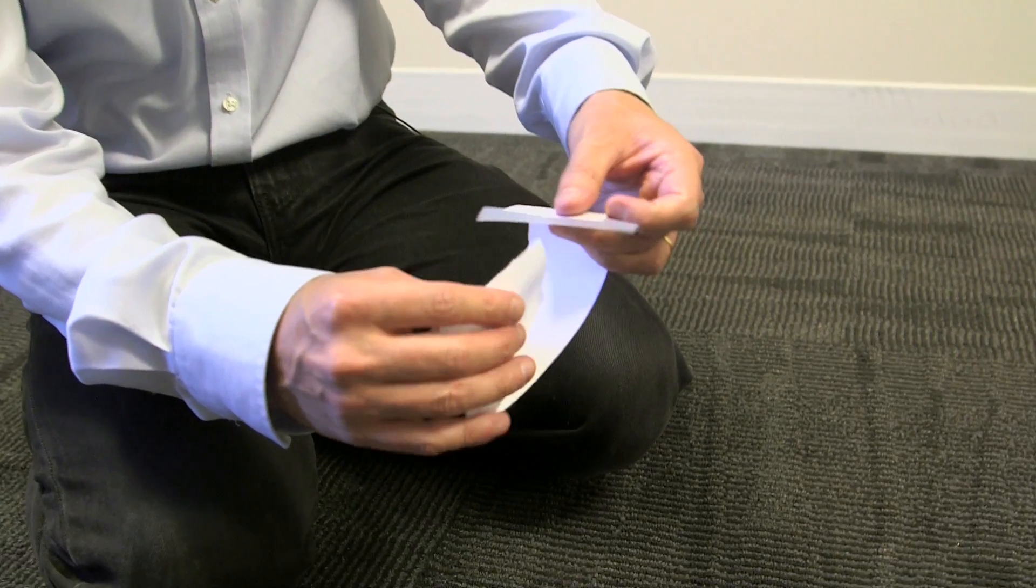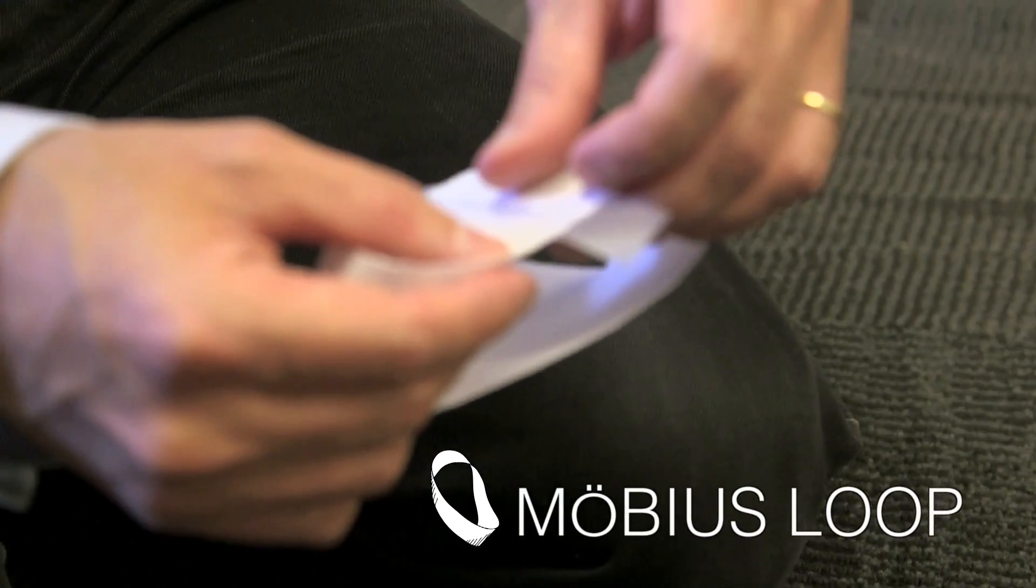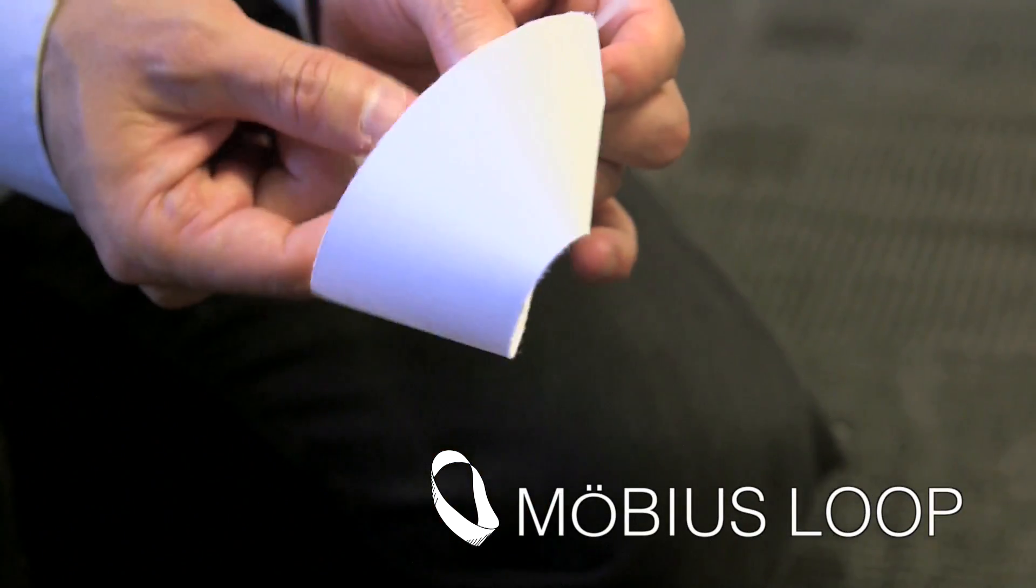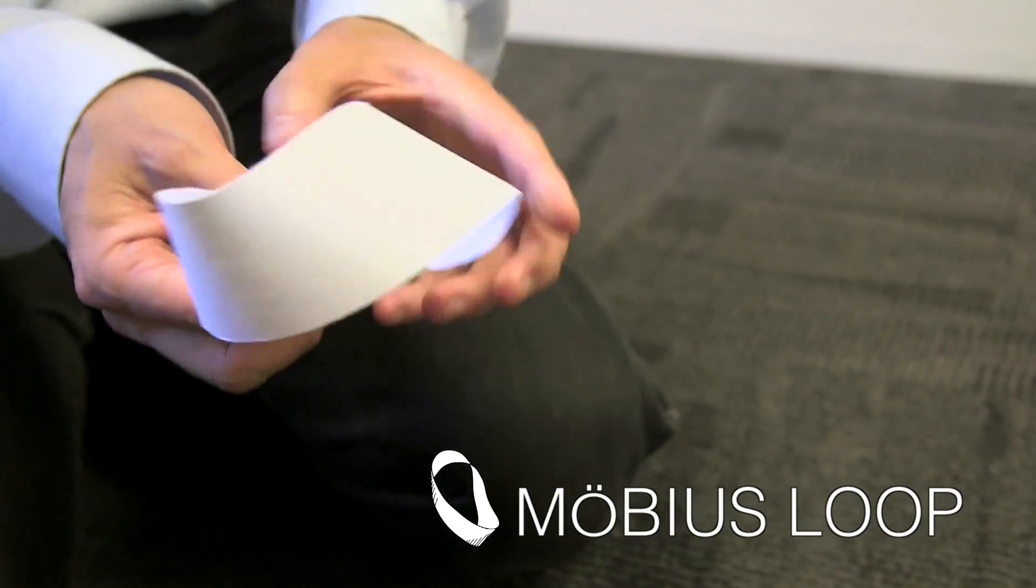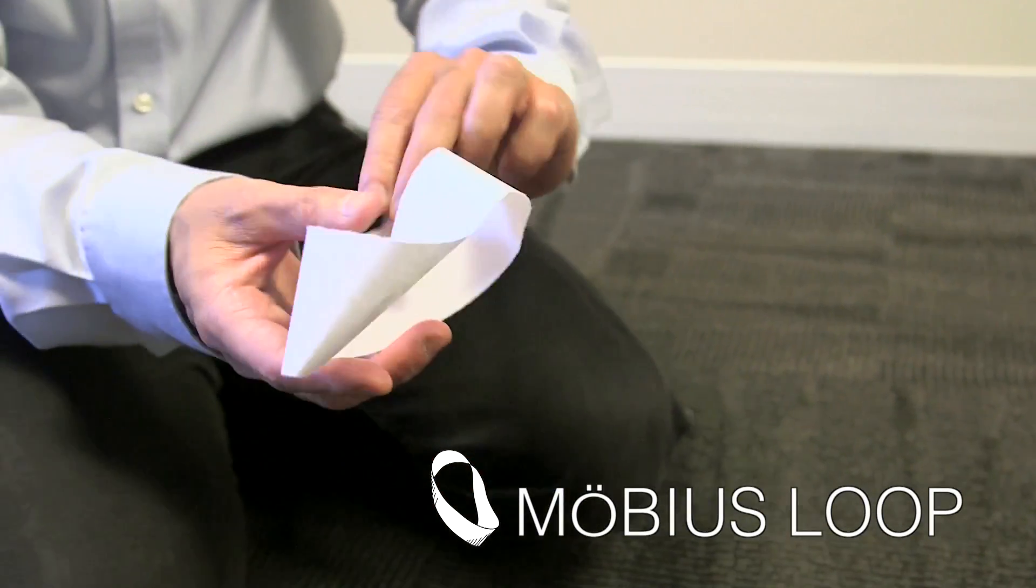Next, we're going to make the famous Möbius strip. Now, that's one twist, 180 degrees, and glue the ends. And this is an object which has only one face, and so forth.